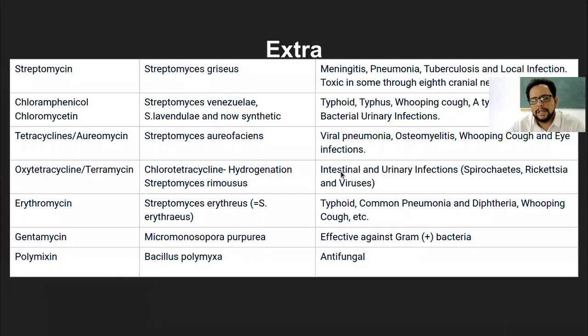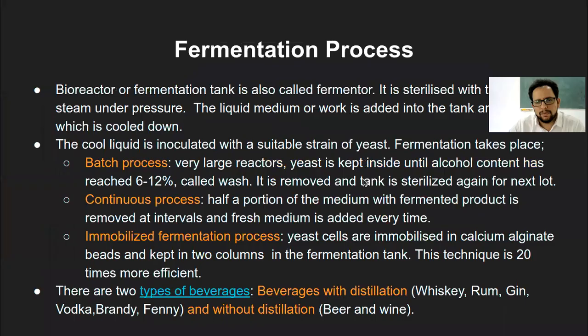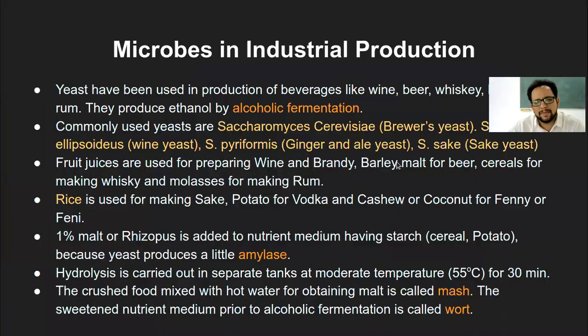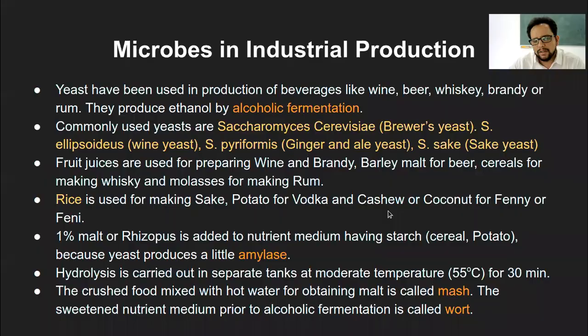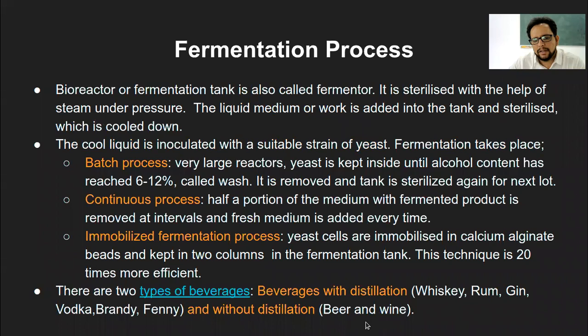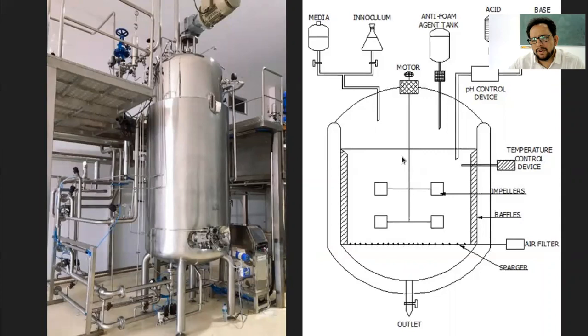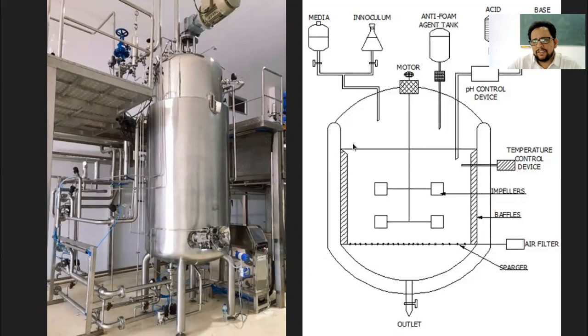Good afternoon. In the last few classes we've been looking at different microbes being used in different industries, especially for human welfare. The first topic was the fermentation process - alcohol production. There were two types: one produced through distillation and the other without distillation. Those were the two types of beverages in general, and we covered the overall structure of the fermenter.